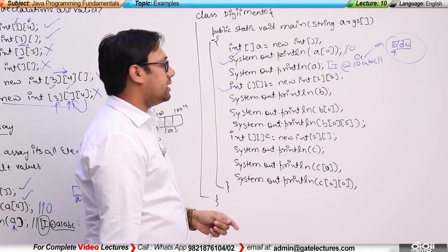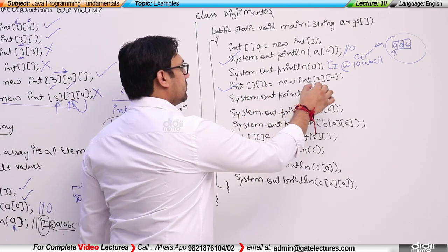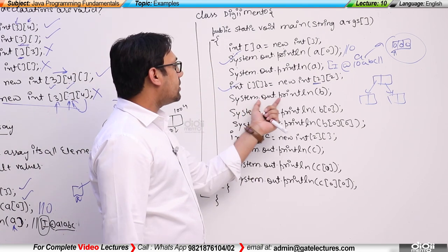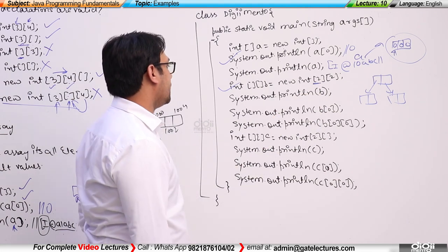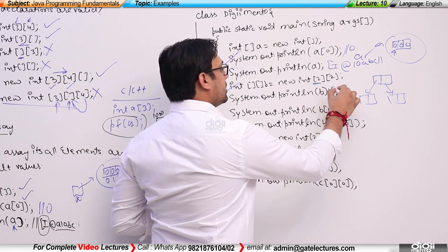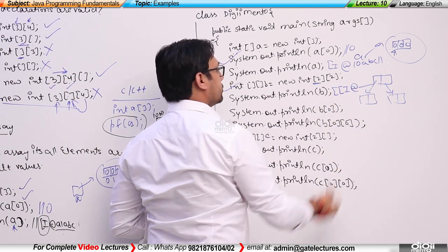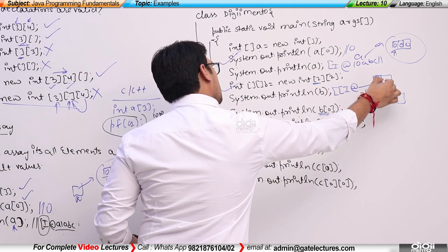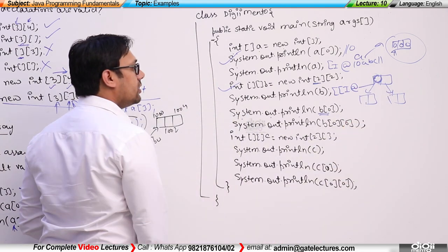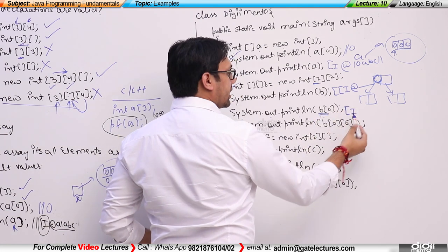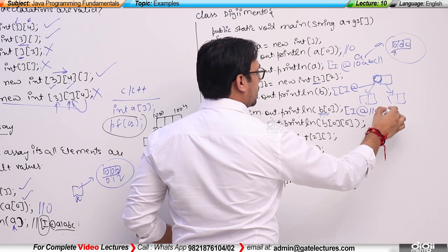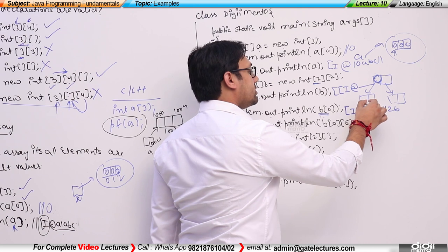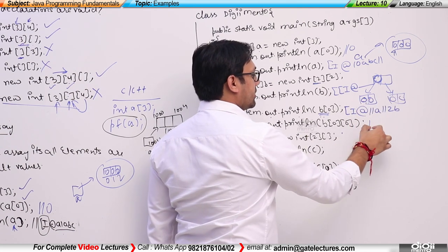The second declaration: int[][] b = new int[2][] — this is also valid. It is a two-dimensional array with two rows, but the columns are not yet specified. If I print b directly with System.out.println(b), the class name for a 2D integer array is '[[I' followed by '@' and a hash code. If I print b[0], since b[0] points to a one-dimensional array object, it prints '[I@' followed by a hash code. And System.out.println(b[0][0]) prints 0, the default value.